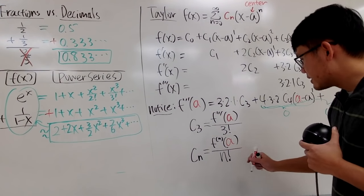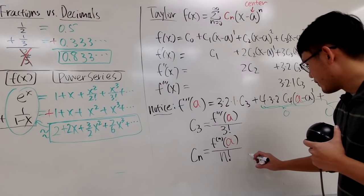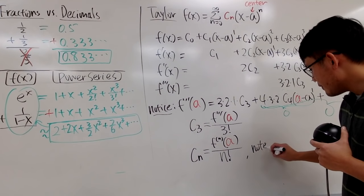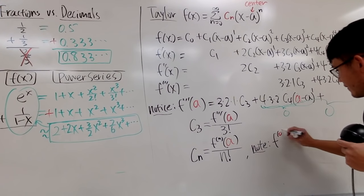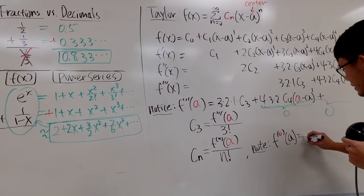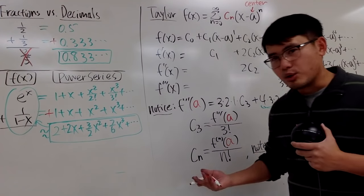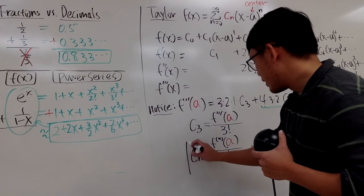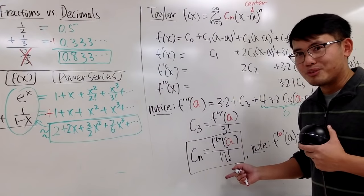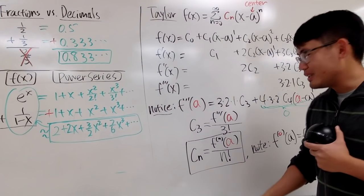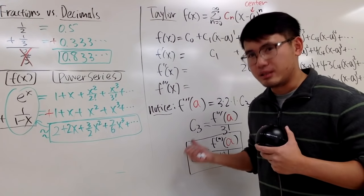And perhaps I will just tell you guys this right here for you guys. Note. The zero derivative of the function at a, this right here is just f of a. Right? The zero derivative is just the original function by convention. So this right here is the coefficient formula, thanks to Taylor. And if you use this, you can get the Taylor series.